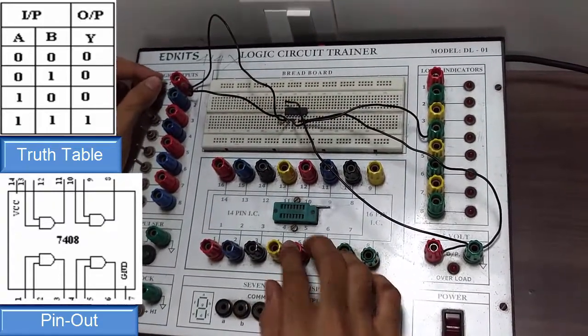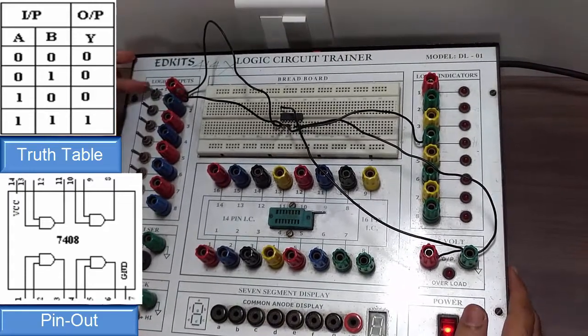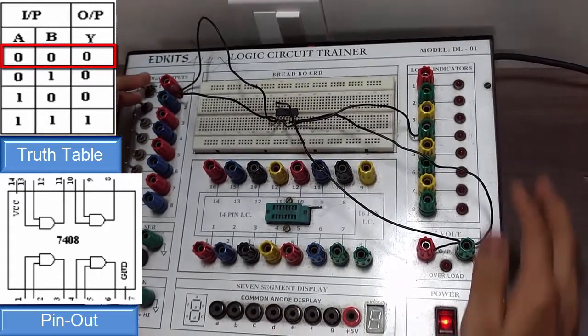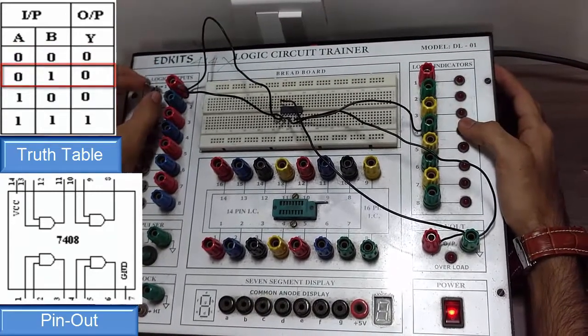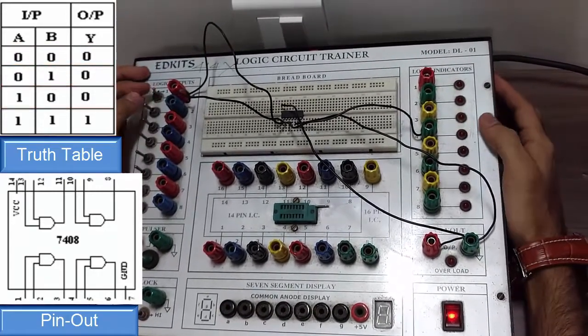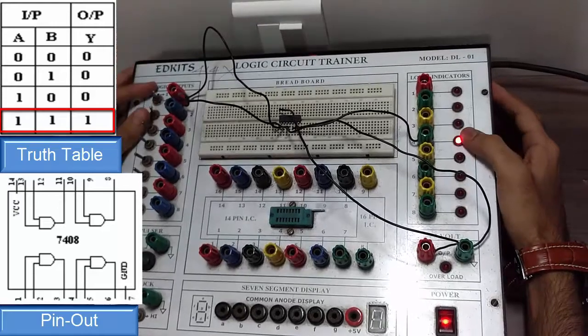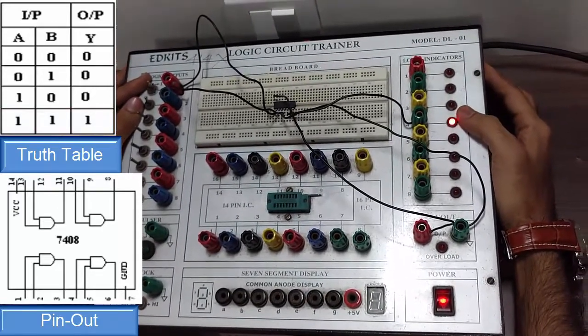So let's verify the truth table now. Let's switch it on. As you can see, for both inputs zero, the output is zero. For zero one, output is still zero. For one zero, output is still zero, and for one one, output is one. Hence we verify the truth table for AND gate.